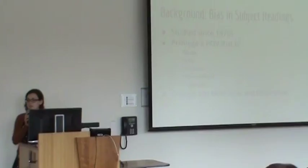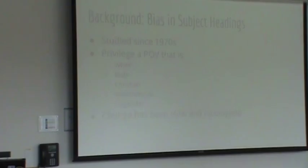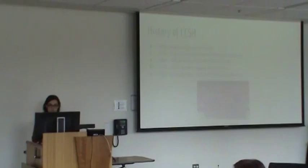Subject headings and bias and prejudice in subject headings have been a major topic of study in LIS research since about the 1970s. Most of the typical subject headings privilege a point of view that is very white, male, Christian, heterosexual, cisgender — the list goes on. Change has happened since the 1970s, but it's been really slow and incomplete.